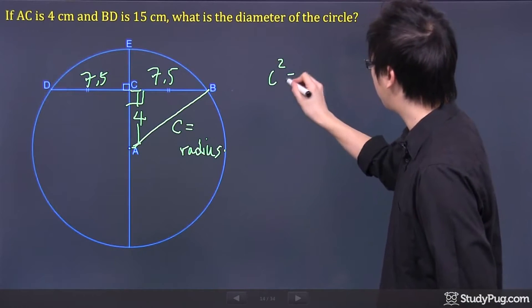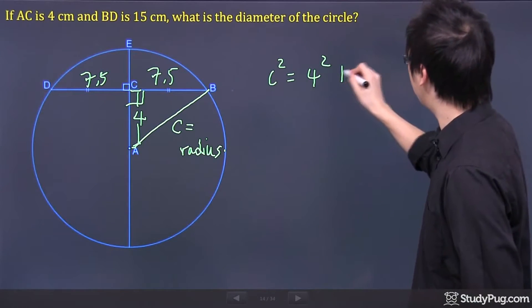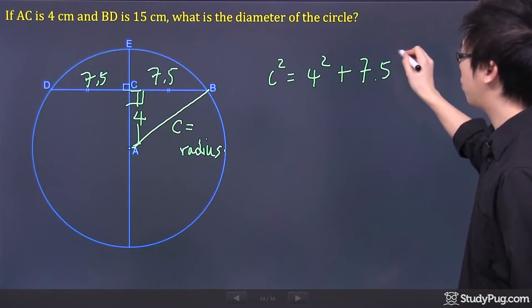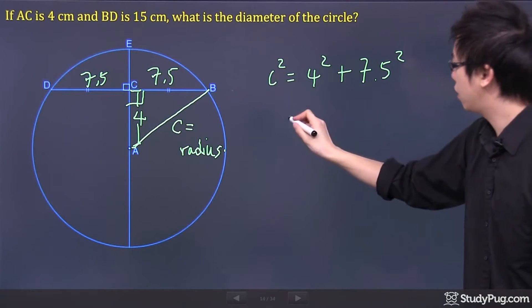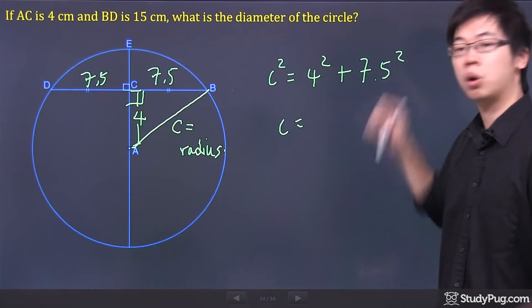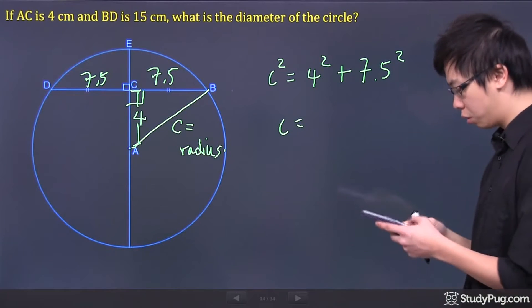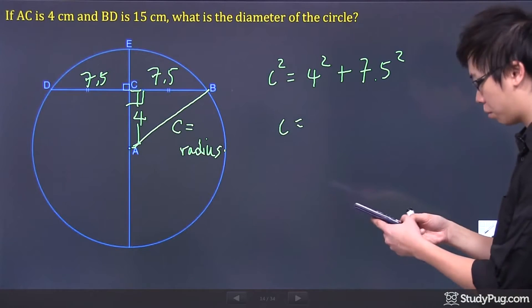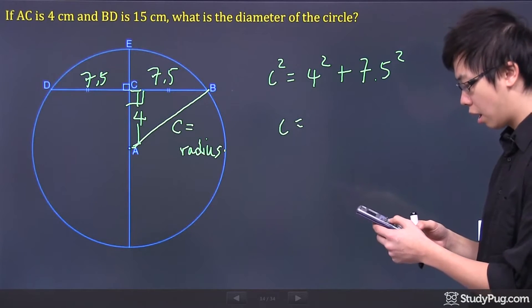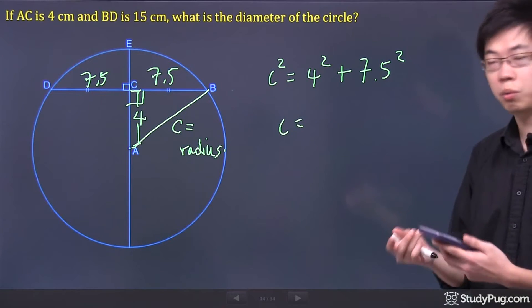To find the C, remember, you have the Pythagorean theorem. So we have 4 squared plus 7.5 squared. To find the C, all you have to do is square root the whole thing once you figure this out. So grab your calculator, go 4 squared plus 7.5 squared, and don't forget to square root the whole thing.